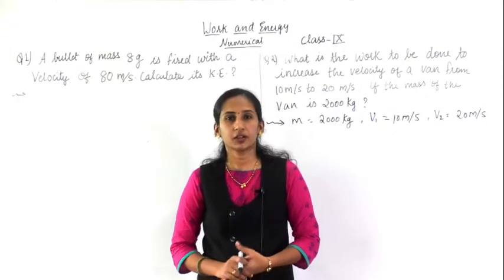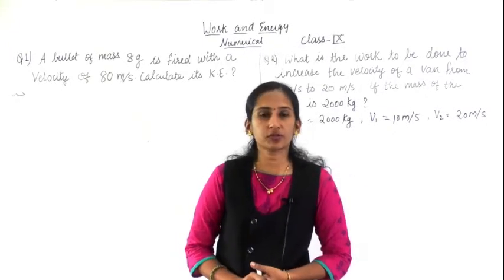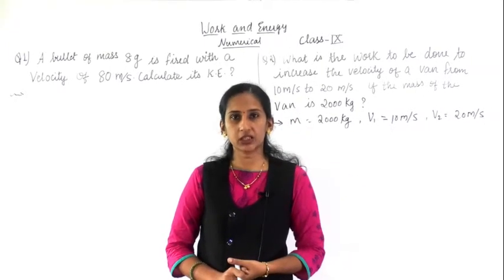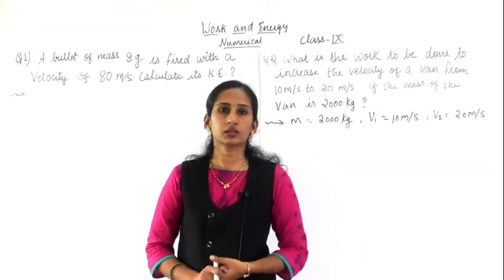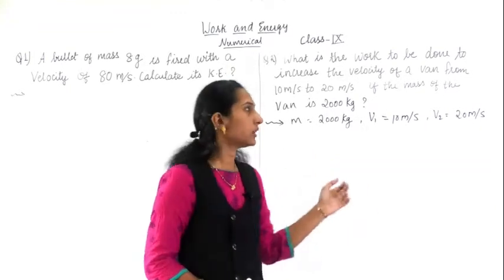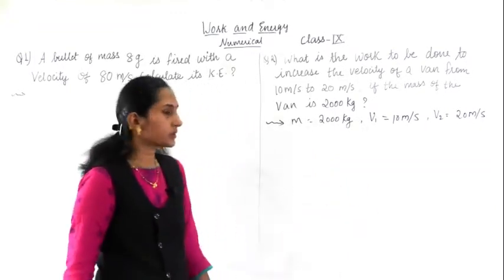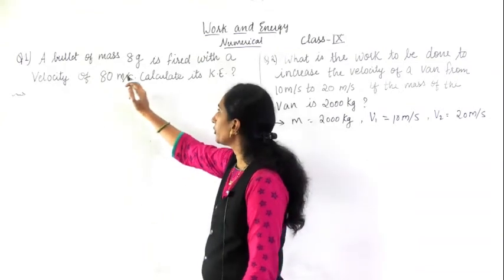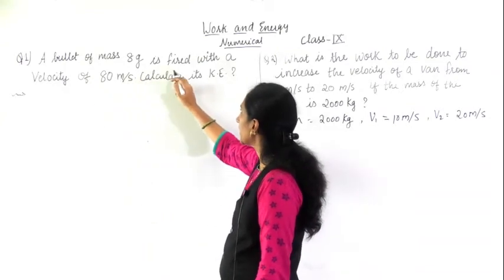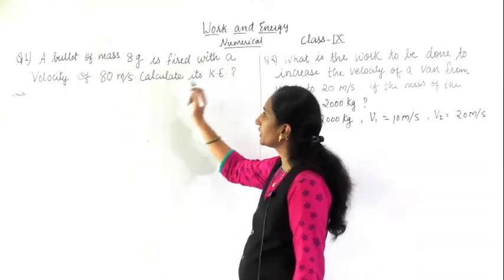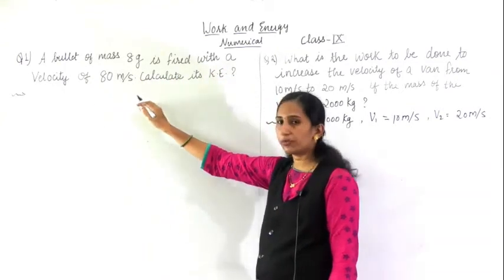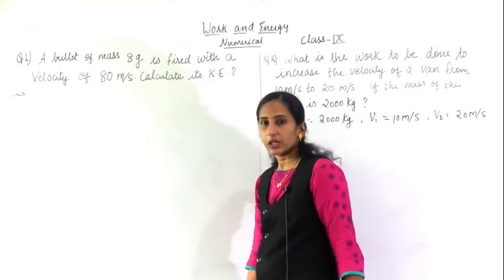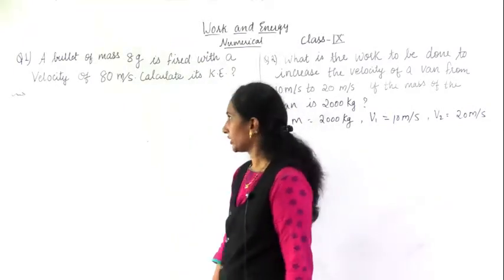Good evening students. Today we are going to see the numericals of kinetic energy. We will solve two different types of problems. First, see this question: a bullet of mass 8 gram is fired with a velocity of 80 meter per second. Calculate its kinetic energy.